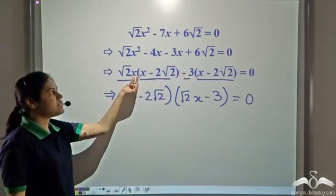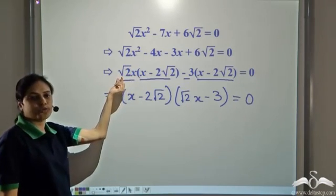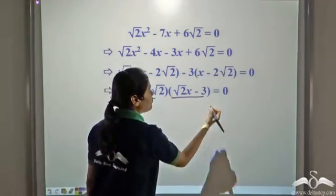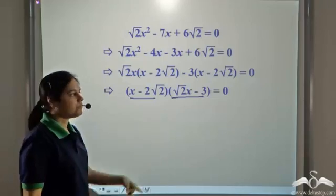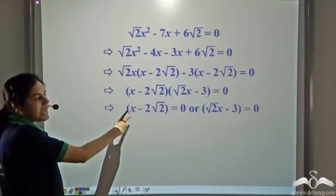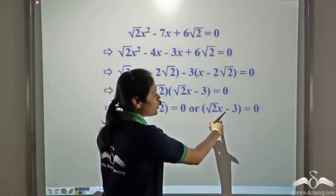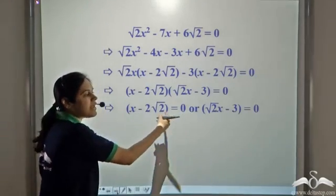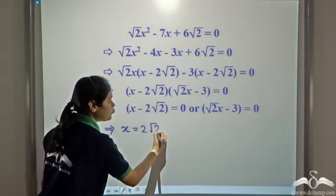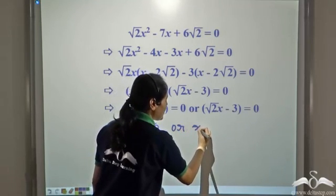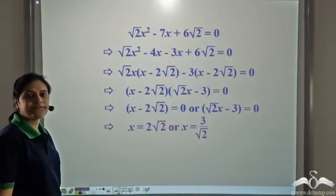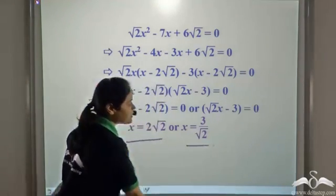Note that x is outside the root — only 2 is inside the root. Taking x minus 2 root 2 common, we are left with root 2x minus 3. So we have x minus 2 root 2 times root 2x minus 3 equals zero. The product of these two is zero, so one of them has to be zero. Either x minus 2 root 2 equals zero, giving x equals 2 root 2, or root 2x minus 3 equals zero, giving x equals 3 by root 2.